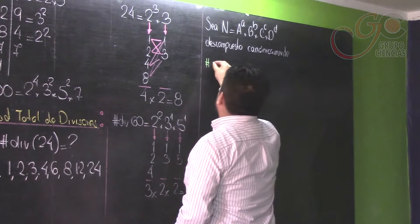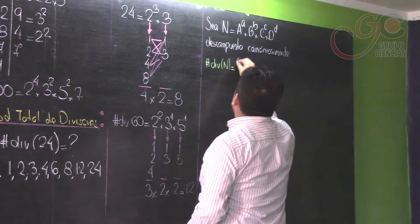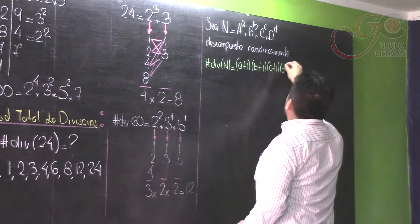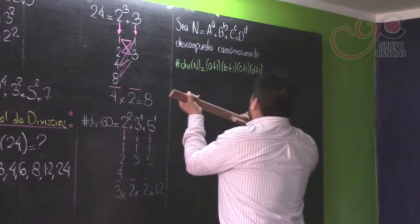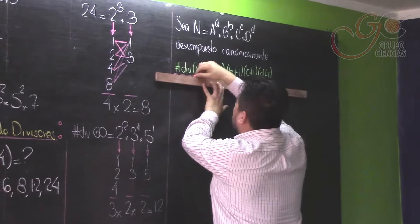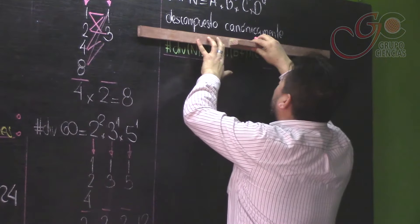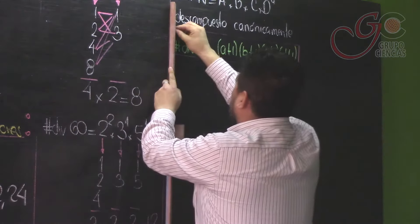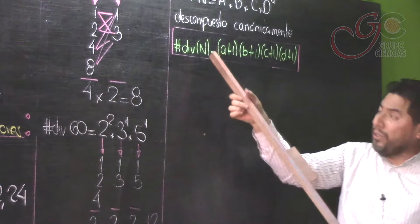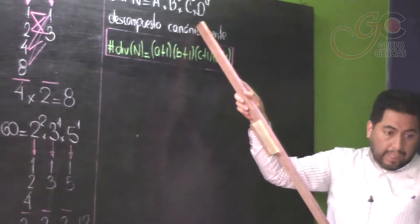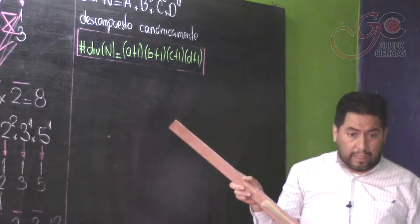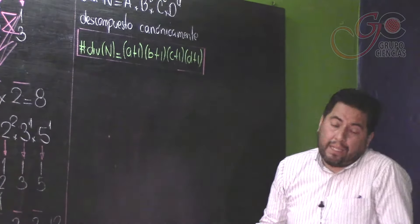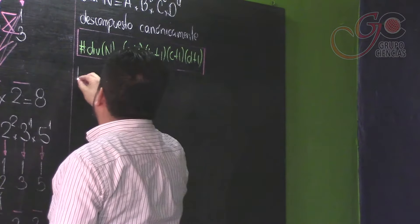A partir de ahora, cuando quiera contarle a un número su cantidad total de divisores, multiplicaré sus exponentes previamente aumentados en 1. Esta fórmula es la que se aplica en la mayoría de problemas, porque la mayoría gira en torno a la cantidad total de divisores. Para contarle a un número cuántos divisores tiene, primero tienes que descomponerlo canónicamente, y después multiplicar sus exponentes aumentados en 1. Si descompones mal, la fórmula ya no sirve.